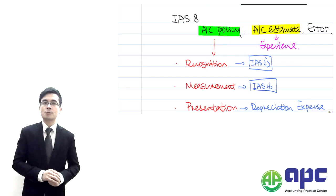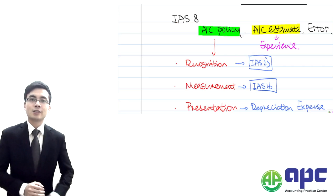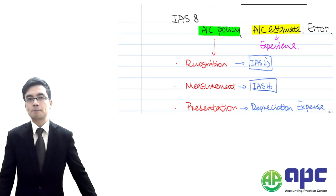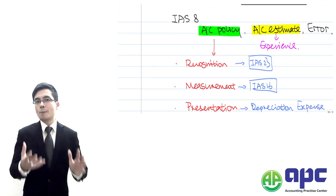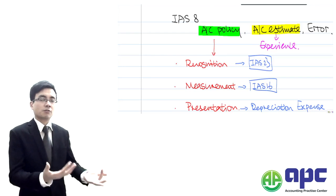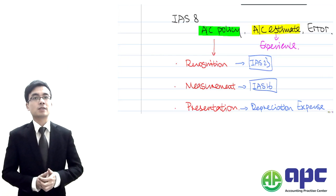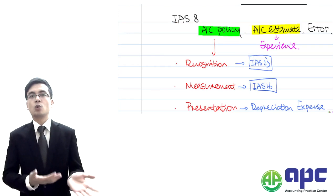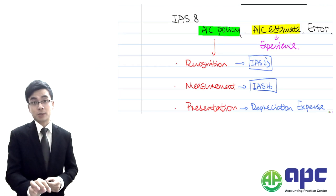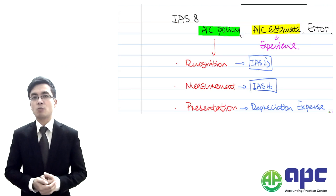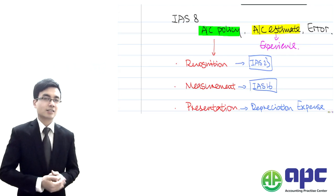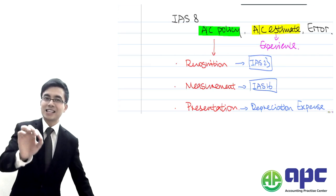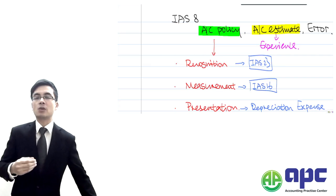Another example within accounting estimate is share-based payment. For some directors, APC would give them shares. The total amount of shares that APC gives those directors will be accounted for as expense. But how much are we going to account for? Whether we estimate 5 directors will leave next year, that's our estimate. Or whether 7 of them will leave—that's the accounting estimate as well. Accounting estimate depends upon your CEO or finance director's own experience, their own judgment.